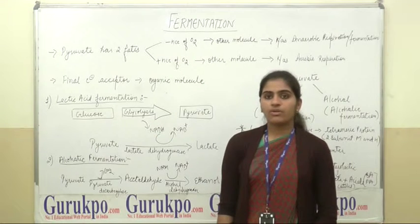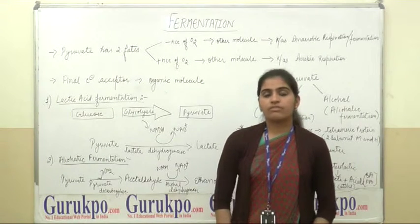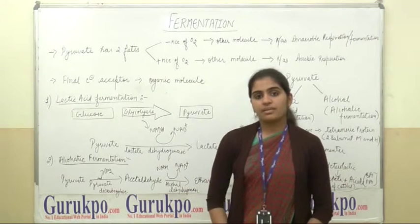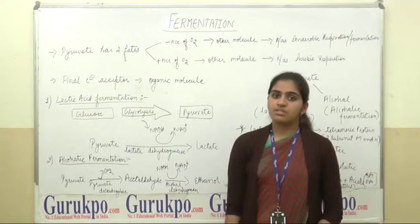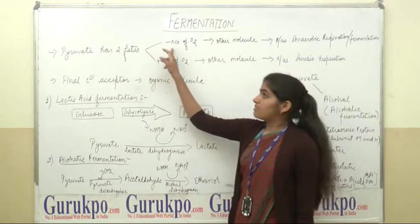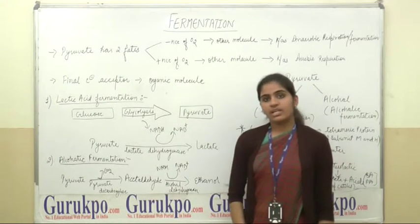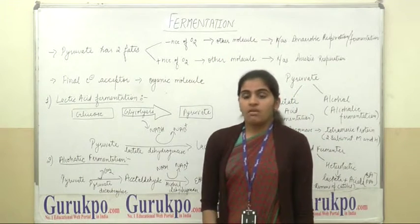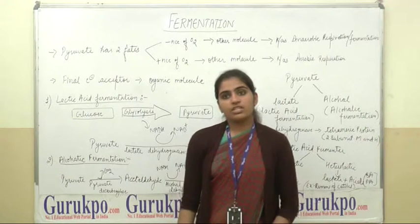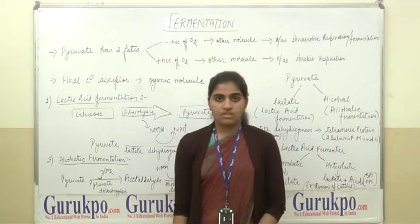As we all know, glycolysis forms the pyruvate by the conversion of glucose to pyruvate. This pyruvate has two fates: in the presence of oxygen and in the absence of oxygen. When it converts in the absence of oxygen into another molecule, this process is known as anaerobic respiration or fermentation. Whereas, in the presence of oxygen, if it converts into another molecule, this process is known as aerobic respiration.